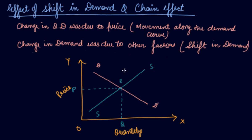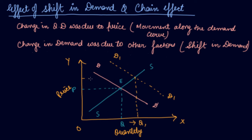Now, if there is a shift in demand — let's say your income increases — your demand curve will shift rightwards to D1. The effect of this rightward shift is that quantity increases from Q to Q1 and price also increases to P1.